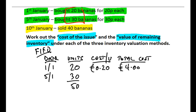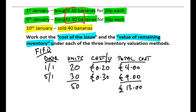On the 5th of January we have another purchase: 30 more bananas, giving us 50 bananas in total. With receipts of inventory, you simply add the new units onto the existing stock. Those bananas cost 30 pence — £0.30 per unit — so 30 times £0.30 gives a total cost of £9. We had £4 worth of inventory, and adding the £9 purchase means we now have 50 bananas with a total value of £13.